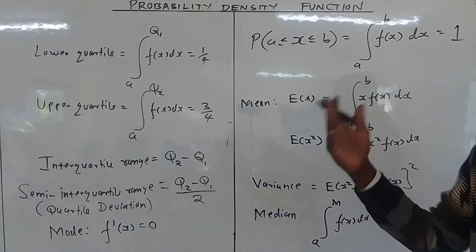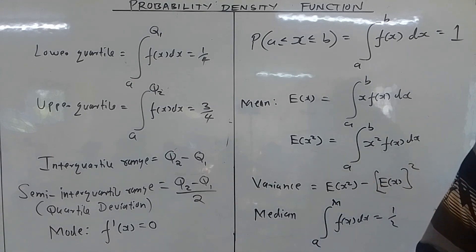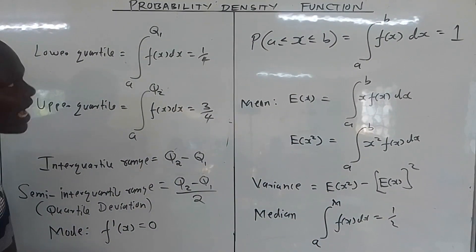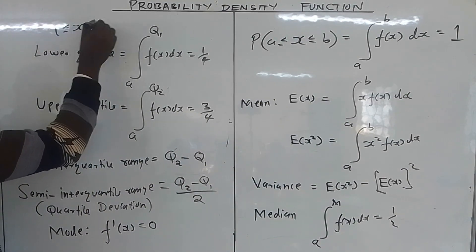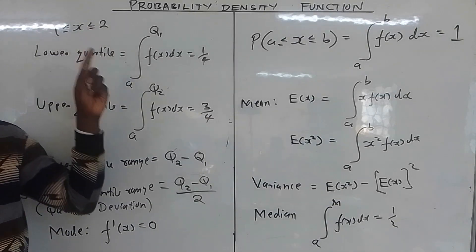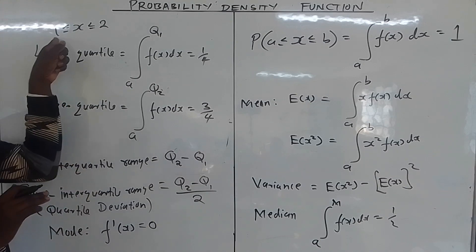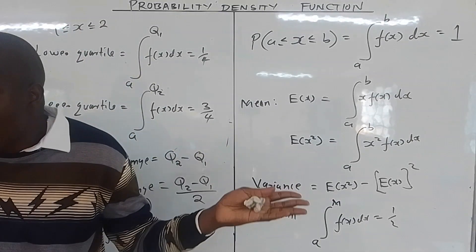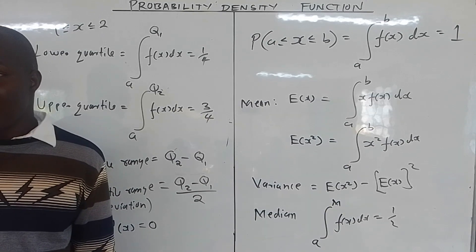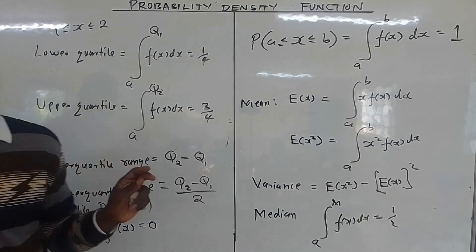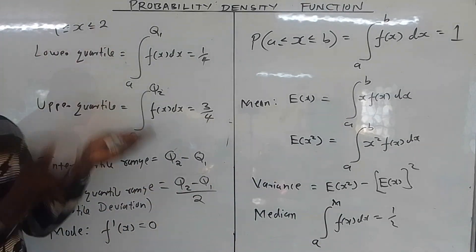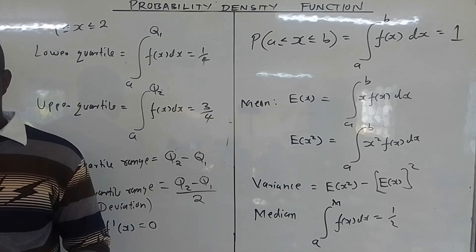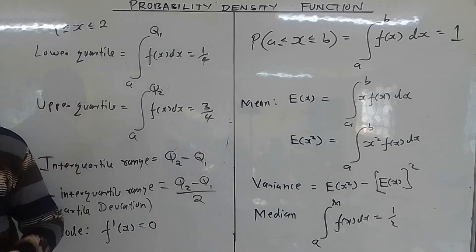All these x values — the mode, variance, standard deviation, quartile range — must lie within the defined range of the continuous random variable. For example, if x is in the interval from 1 to 2, then the mode, median, and mean must all be between 1 and 2. The measures of location must be within that range. If you get anything outside that range it is irrelevant.